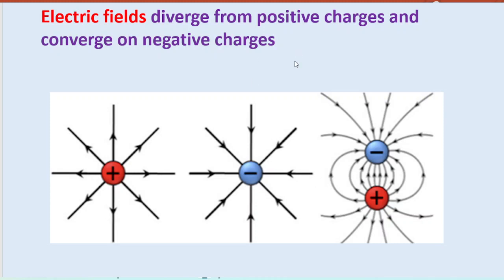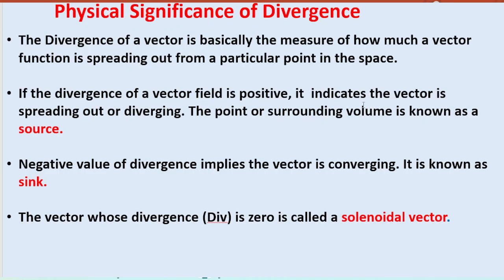In the case of electric field lines, lines originate from positive charge and diverge — this is a source. Whereas field lines converge at a negative charge — this is a sink with negative divergence. Physically, divergence tells how much a vector function is spreading out from a point. Positive divergence means the vector is diverging (source point), negative divergence means converging (sink). If a vector has zero divergence it is called a solenoidal vector.